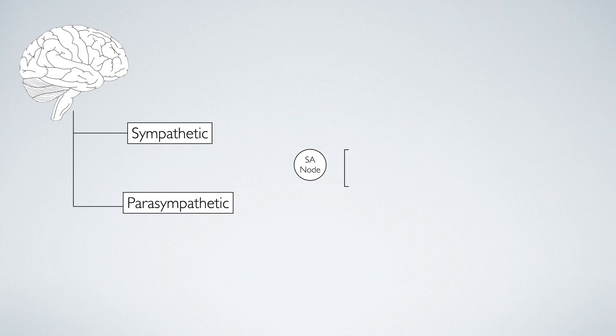Impulse production via the SA node is governed by the autonomic nervous system, and this has two branches. The sympathetic, which encourages the body to fight or flight, and the parasympathetic, which encourages rest and relaxation.